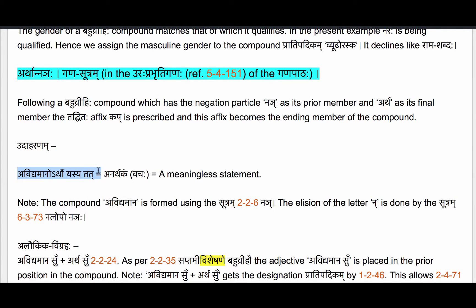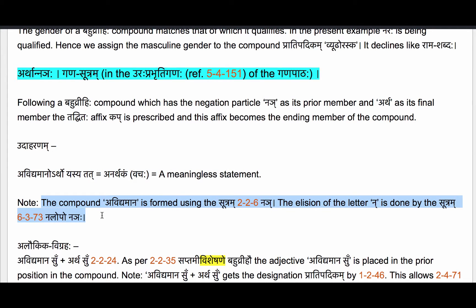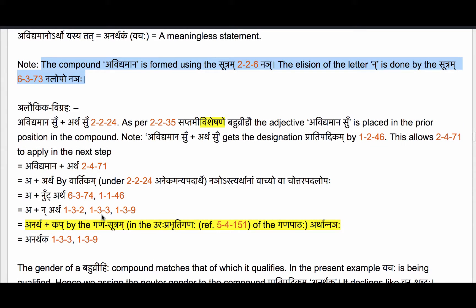The example here is: Avidyamanartho yasya tat — Avidyamanaha arthaha yasya tat — equals Anarthakam vachaha, meaning 'a meaningless statement.' Note that the compound Avidyamana is formed using Sutram 2.2.69, and the elision of the letter N is done by Sutram 6.3.73 Nalopo Nanyaha, which we are very familiar with.